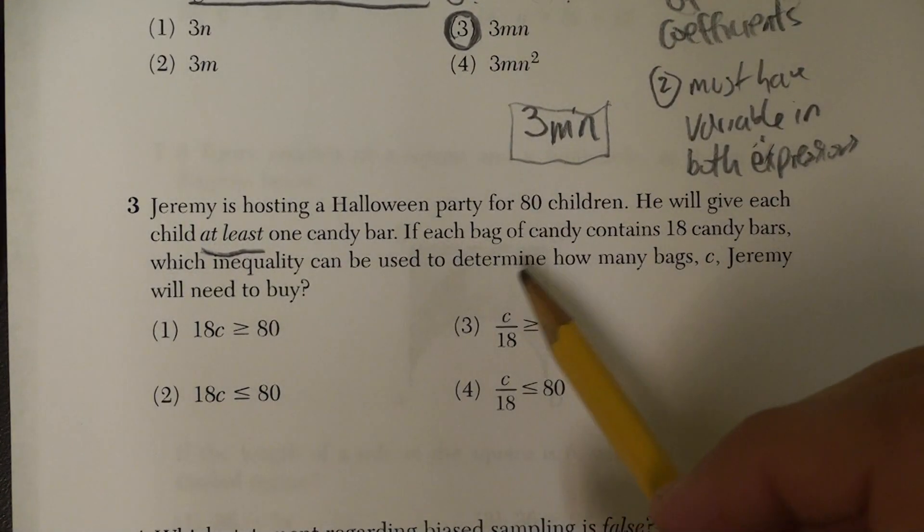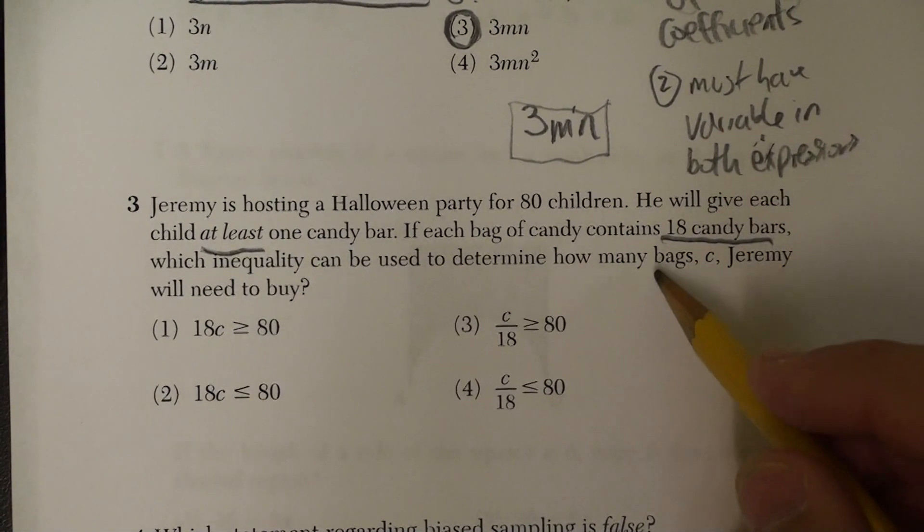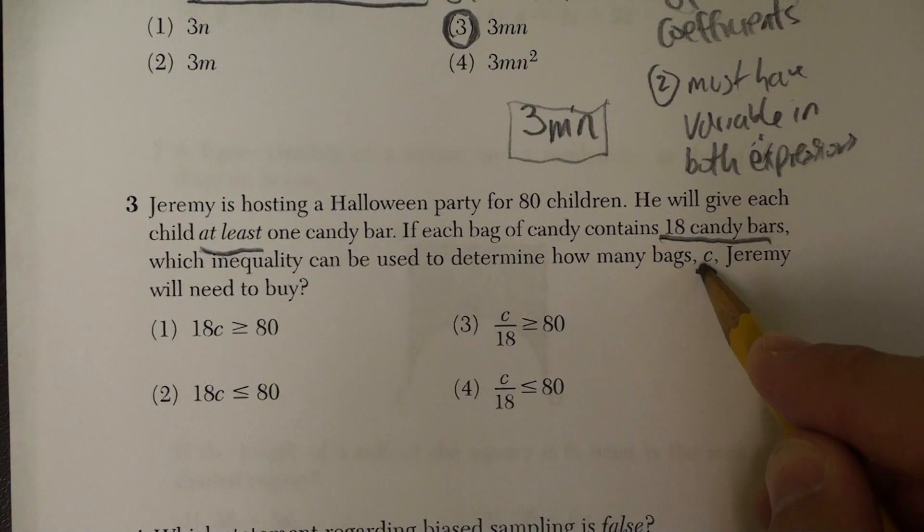I notice that each bag of candy contains 18 candy bars, and I notice that we're calling a bag of candy C, which is a variable.